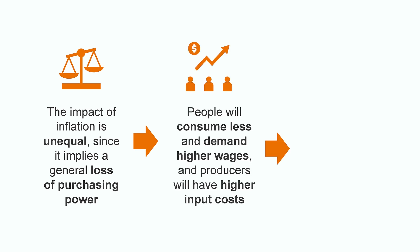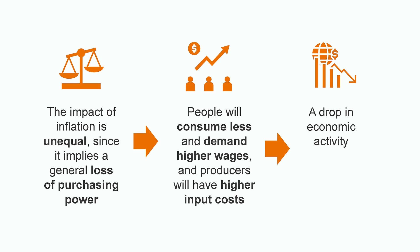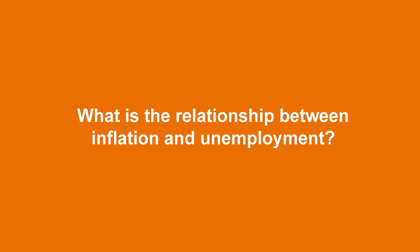People will consume less and demand higher wages, and producers will have higher input costs. This can turn into a recession or drop in economic activity, which is caused when the loss in consumption and investment generates a fall in the general level of output. Both inflation and unemployment represent great dangers in macroeconomics. Governments must try to keep both indicators as controlled as possible in order to keep sustainable levels of economic growth — in other words, low inflation and unemployment. But is that easy and possible?